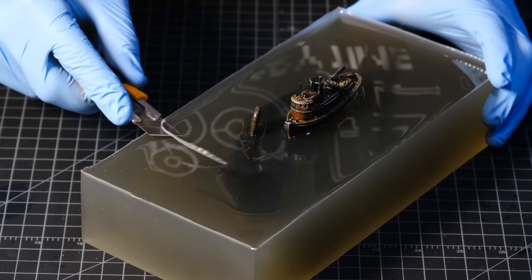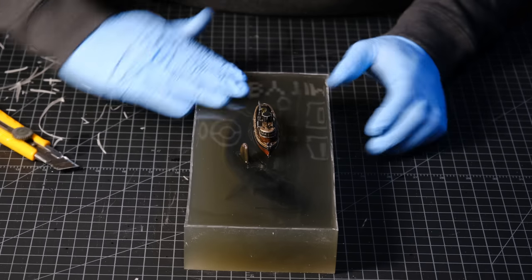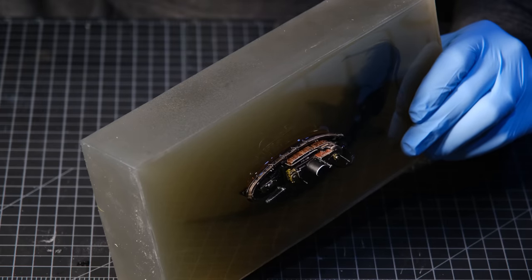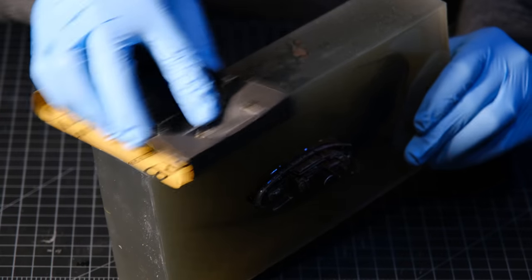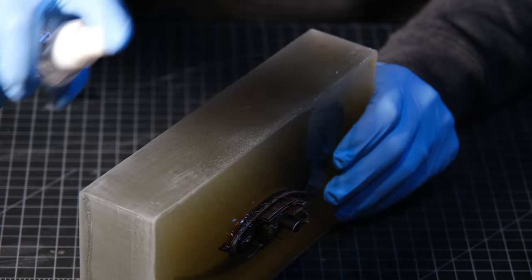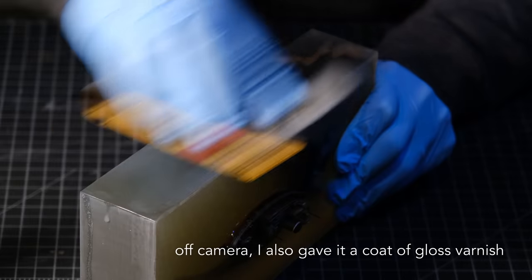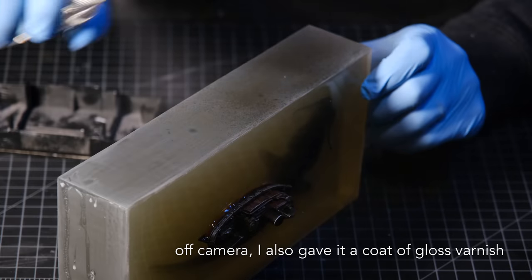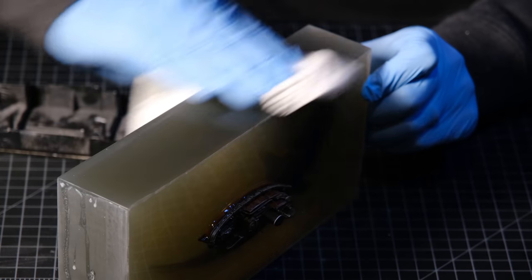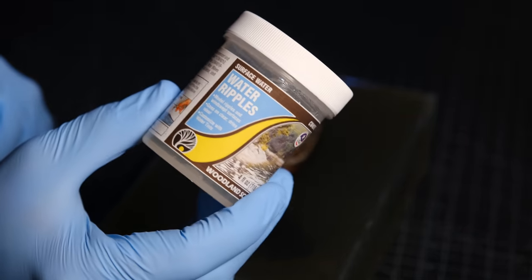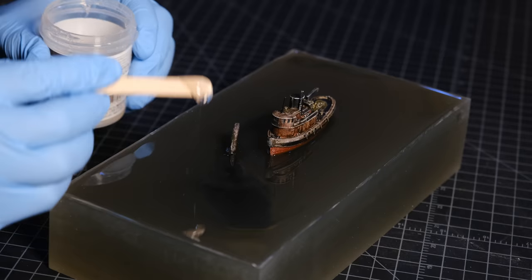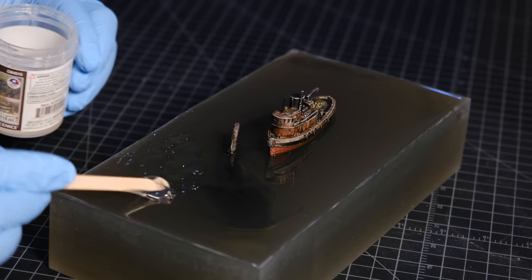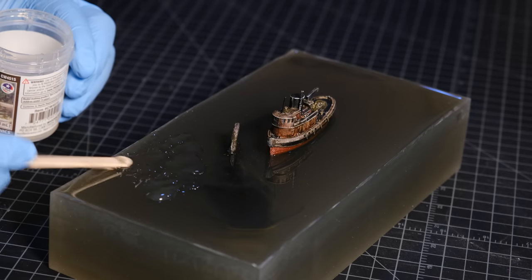I then cleaned up the edges with a hobby knife, and I gave all of the sides a shinier surface with wet sanding. I started with 800 grit and worked my way up to 2000. I then used some water effects from Woodland Scenics to create a more realistic water surface. I spread it out with a popsicle stick, and made sure to also include a wake behind the boat.